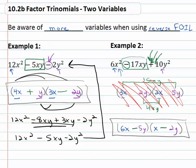If there are more variables, we go through the same exact process and just account for that second variable in the second term.